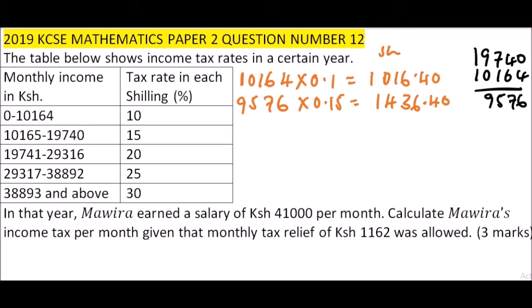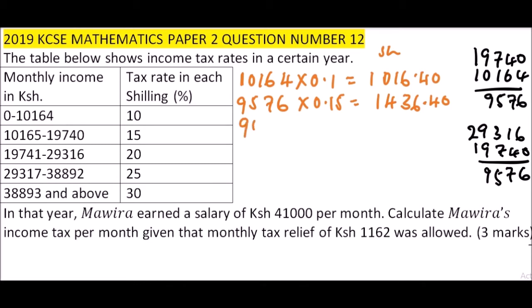If you subtract again — that is 29,316 subtract 19,740 — you get 9,576. So the third bracket amount is 9,576, which we multiply by 0.20. This gives us 1,915.20 shillings.